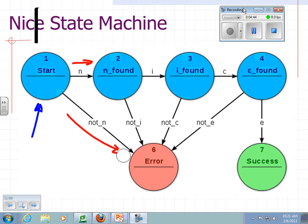So, you can see that if you have an N, then an I, then a C, then an E, you go to the accepting state. And I'll just put the line around it. Anything else, and you go to the error state.